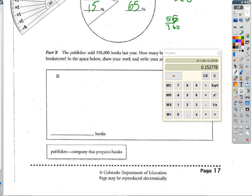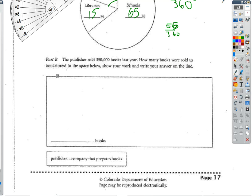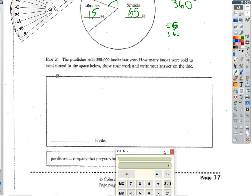Now for the last problem, the last piece of this. So we have 350,000 books that this clearinghouse made, and I know that 20% were going to the bookstores.